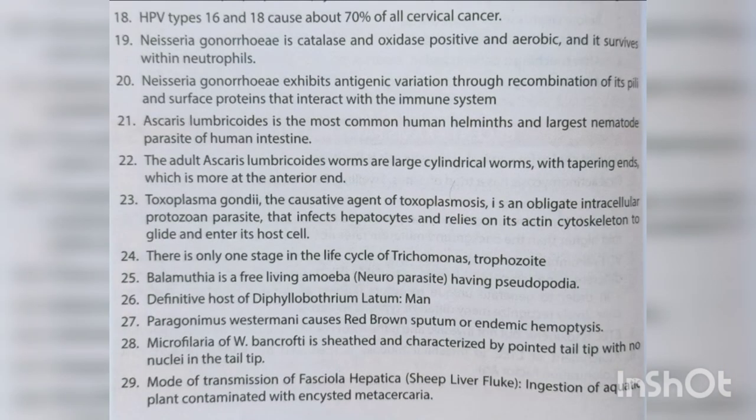Neisseria gonorrhoeae is catalase- and oxidase-positive, aerobic, and survives within neutrophils. It exhibits antigenic variation through recombination of its pili and surface proteins that interact with the immune system. Ascaris lumbricoides is the most common and largest nematode parasite of the human intestine; adult worms are large cylindrical worms with tapering ends.